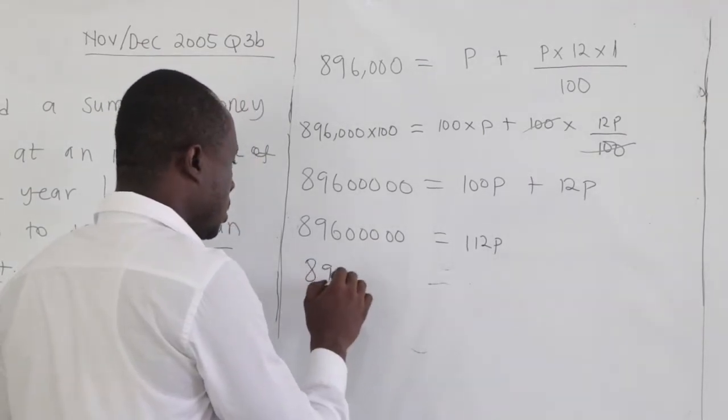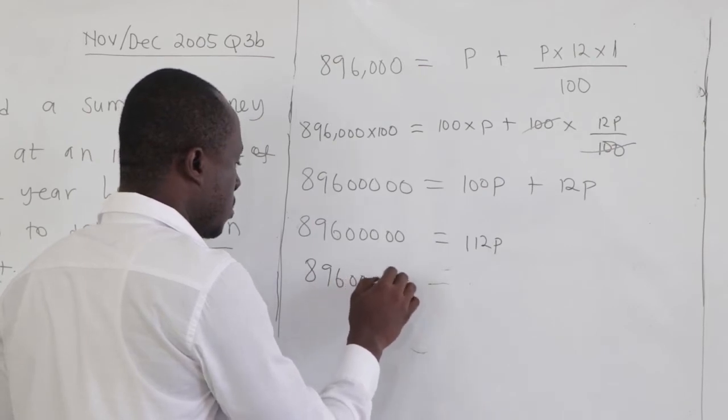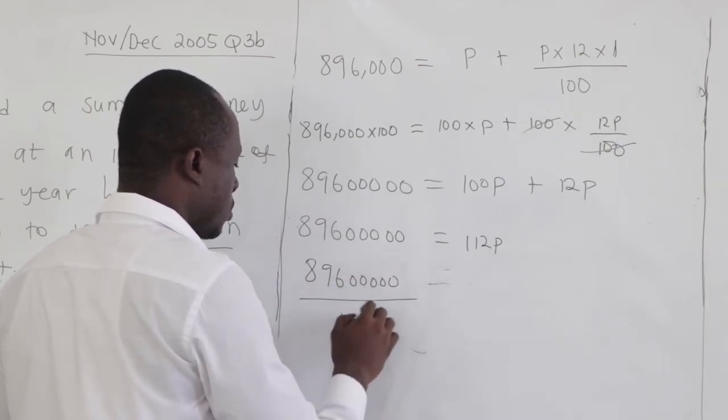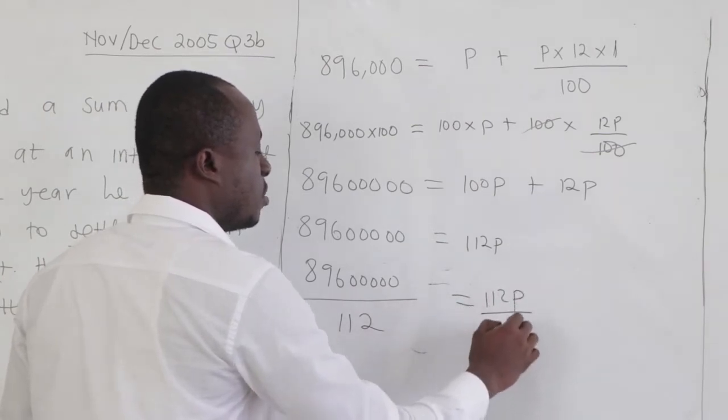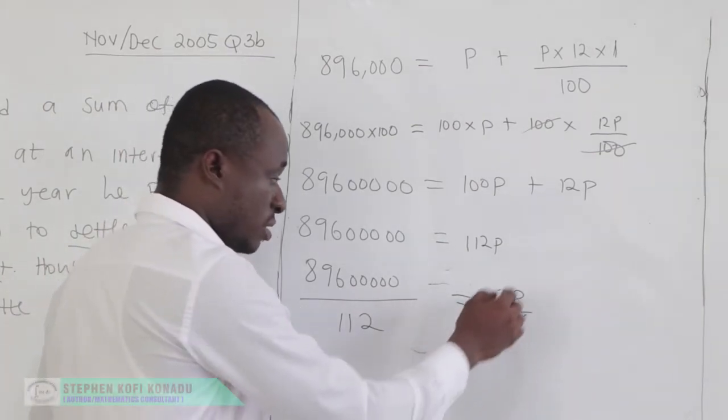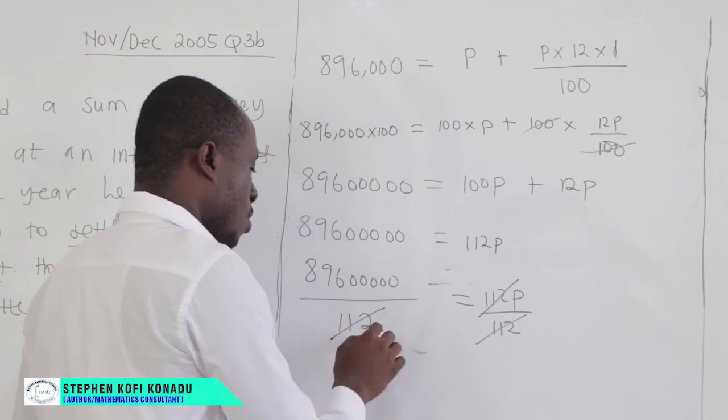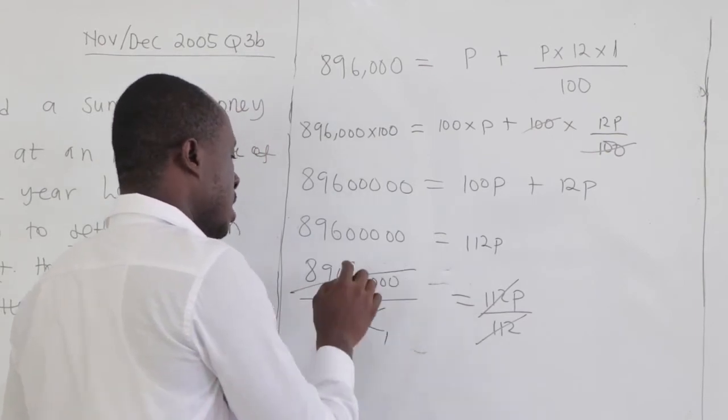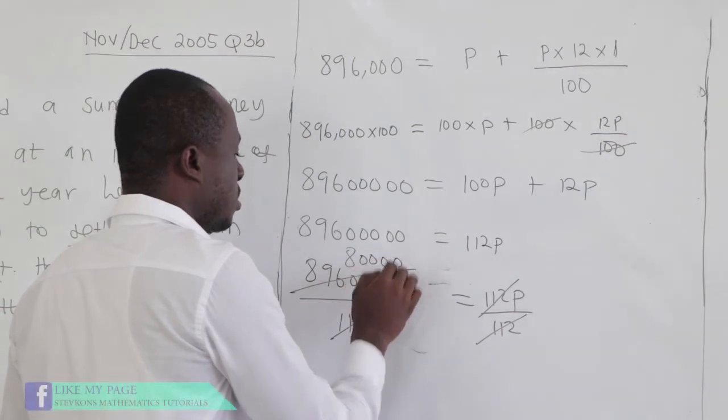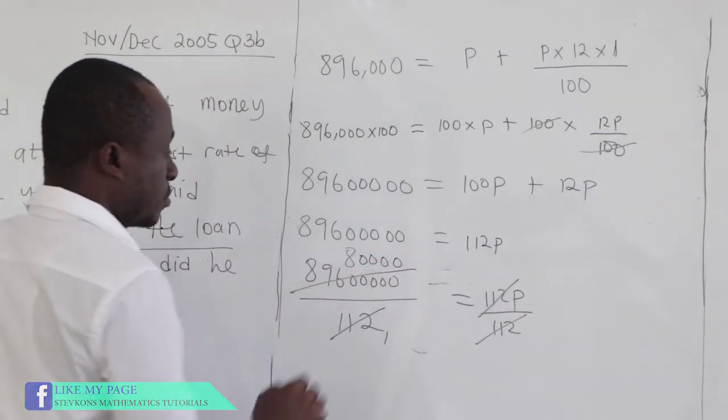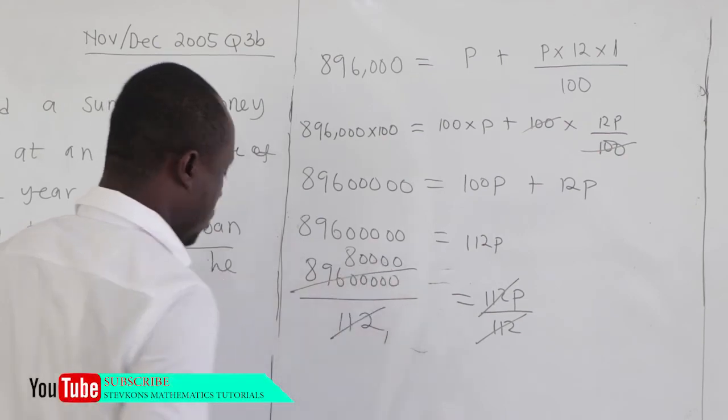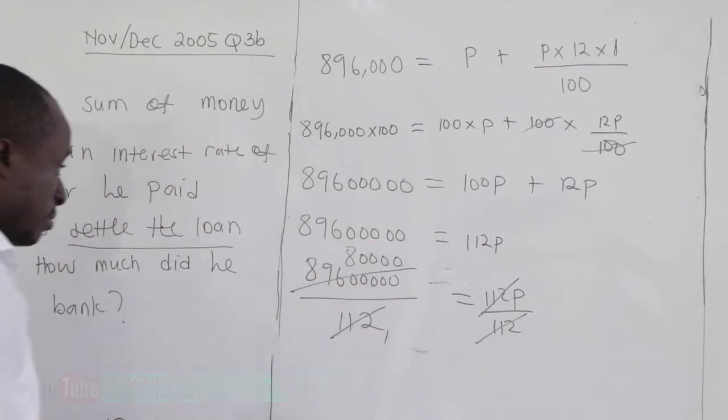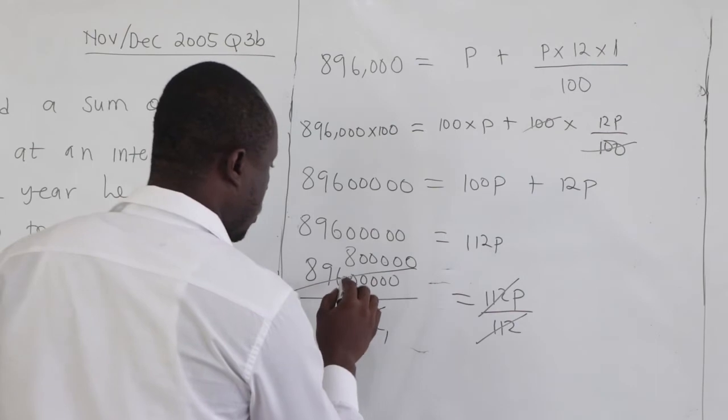So 89,600,000 all over 112, equal to 112P all over 112. So this is canceling on that. Now, how many times would 112 go into that? And that would be 800,000.